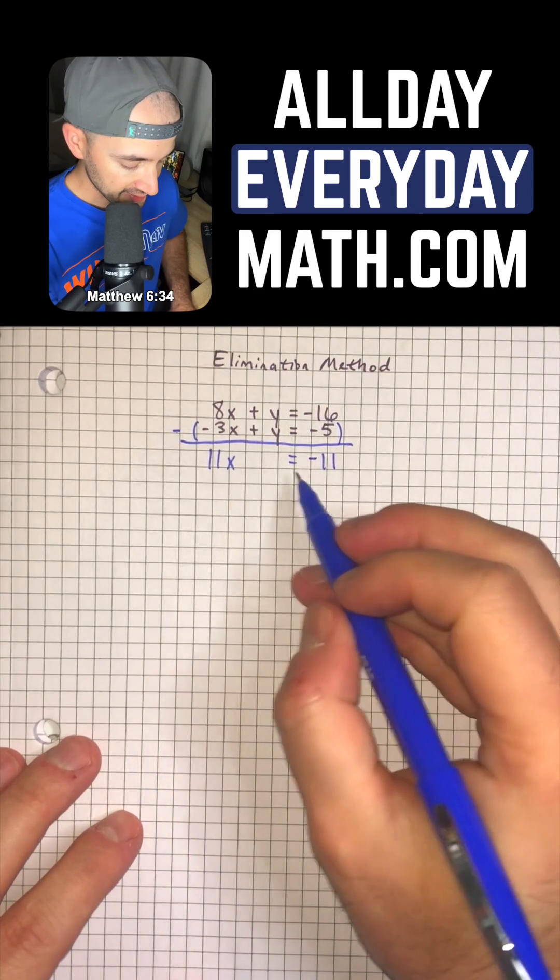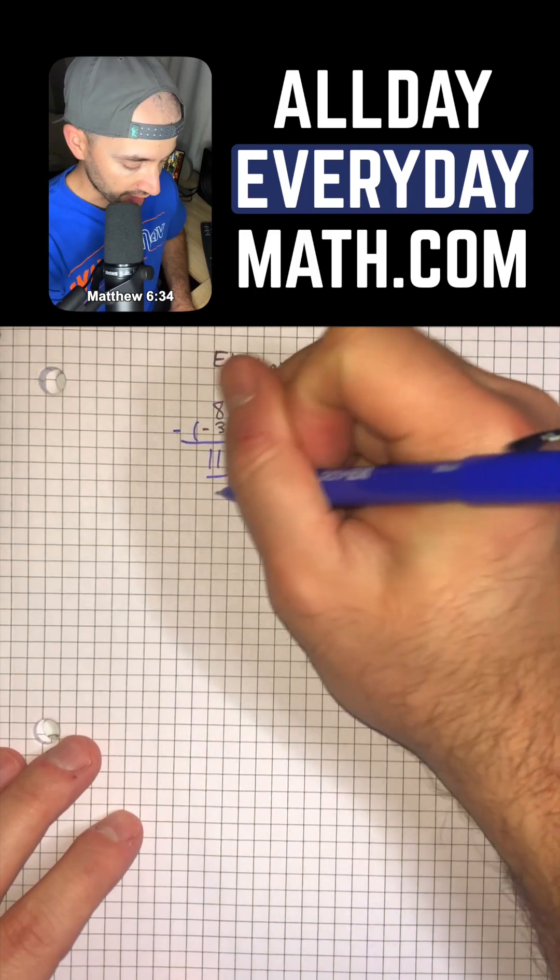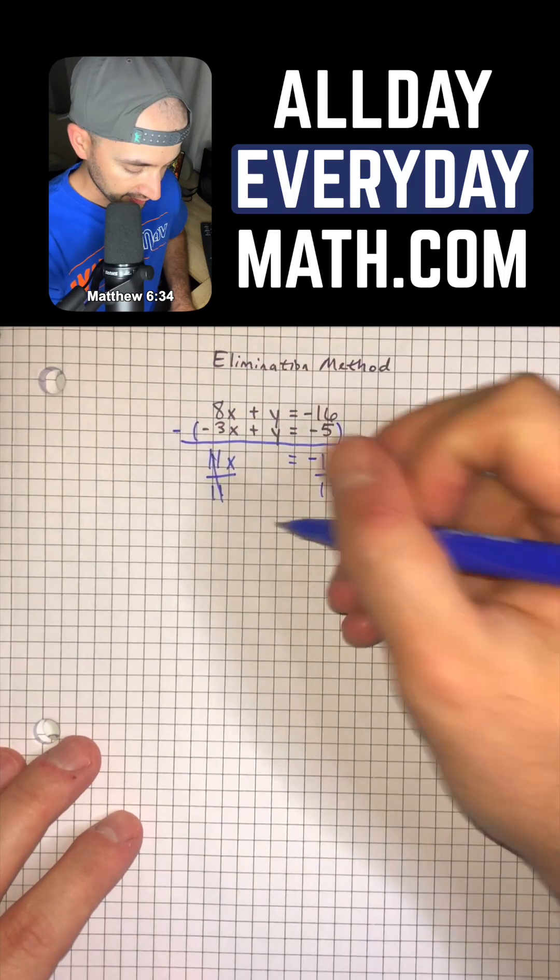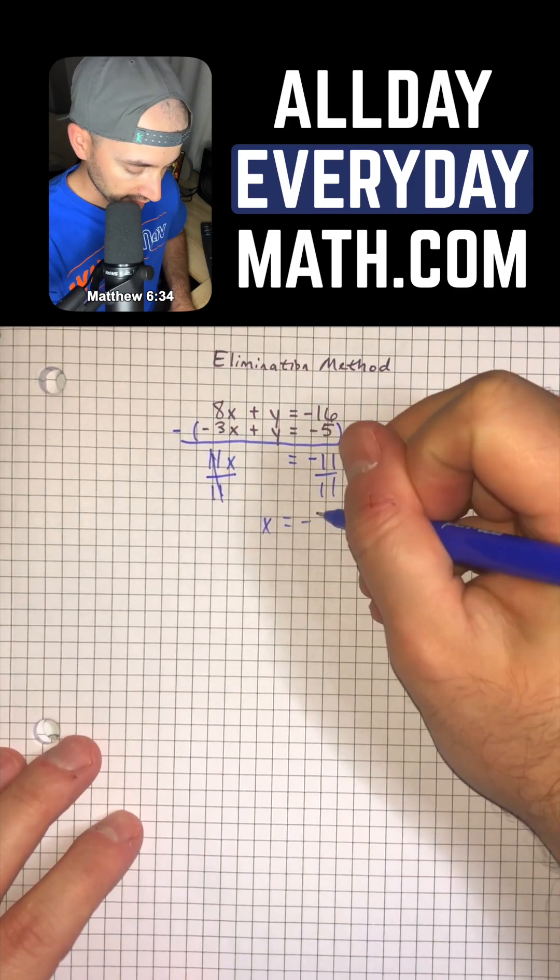So 11x equals negative 11. We can divide by 11 on both sides to get x is equal to negative 1.